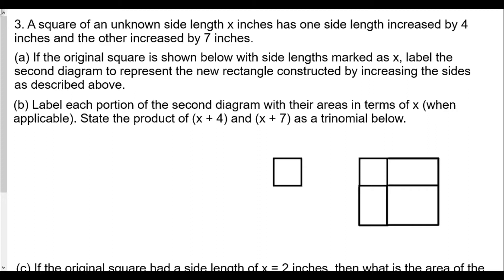Alright, so question number three. A square of unknown side length x inches has one side length increased by 4 inches and the other increased by 7 inches. If the original square below with sides marked as x, so these are marked as x,